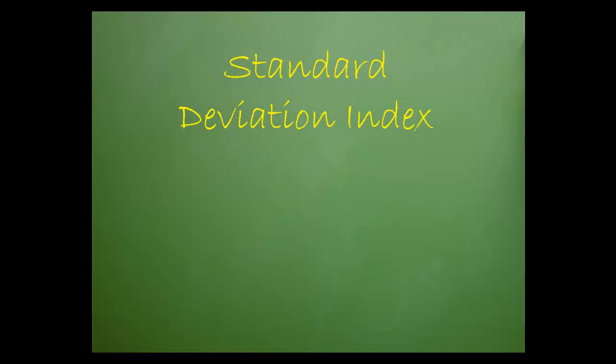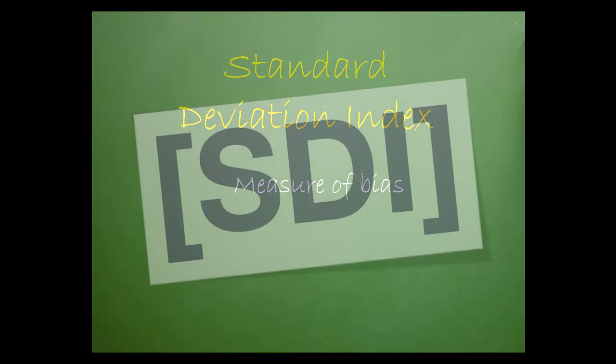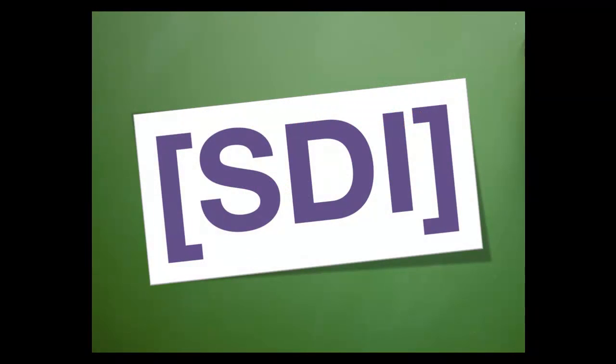Let's start with a definition. The standard deviation index is a measurement of bias, or how close your value is to a target value. In shorthand, you'll often see the standard deviation index expressed as SDI.